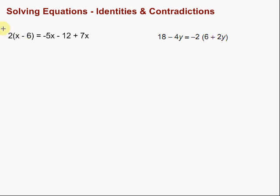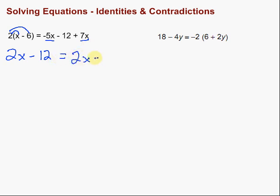This first one we're going to go ahead and solve. The first step is to distribute that 2 through to get rid of those parentheses. So we have 2 times x, which is 2x, and then 2 times negative 6 is going to give us minus 12. Then on this side, I've got some like terms I can combine — a negative 5x and a 7x — and I'm going to have 2x minus 12.